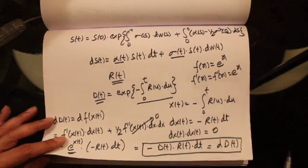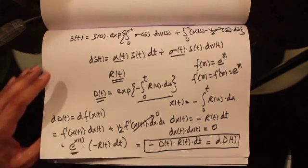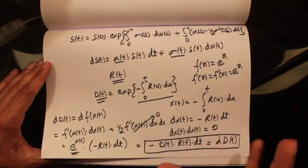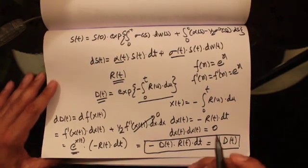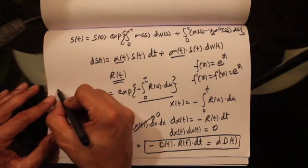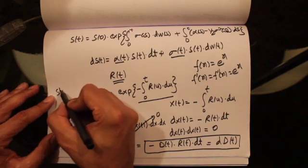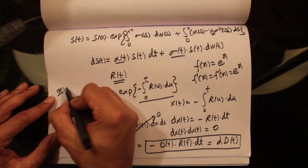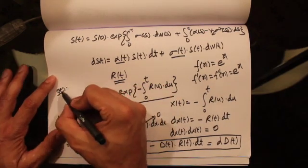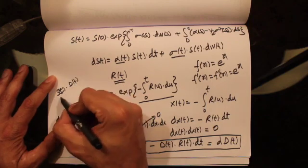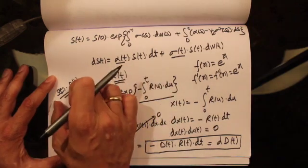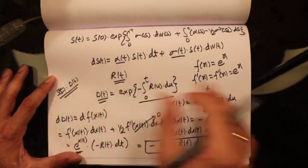Next, what we would like to do is figure out what the differential of the discounted stock price is. The stock price is given by S(t), and the discounted value of the stock price is S(t) times D(t), so let's find what the differential of this product is.